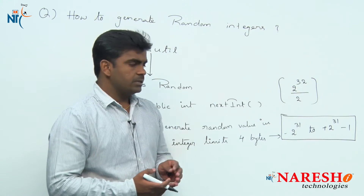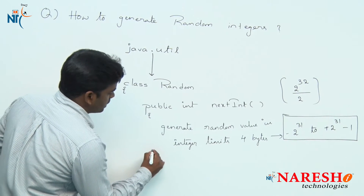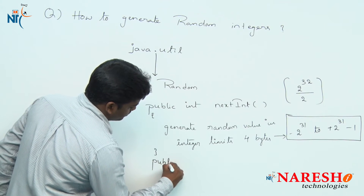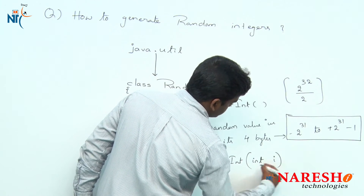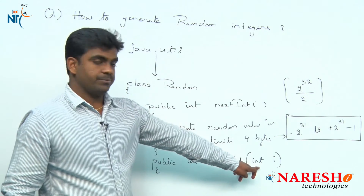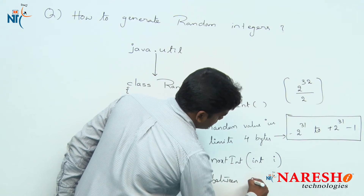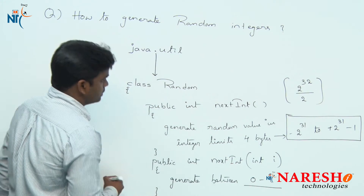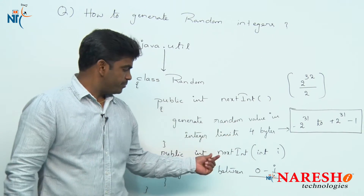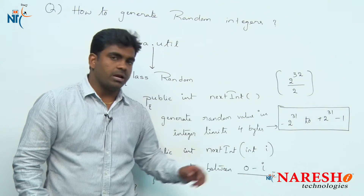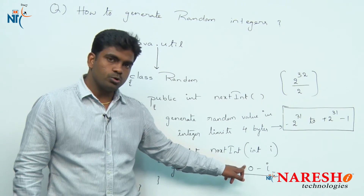If you do not want to generate within the full integer limits, but instead from 0 to a particular upper limit, there is one more method: public int nextInt, which takes an upper limit as an argument. You pass an integer value, and then it will generate any random value between 0 and that given upper limit. So we have two methods: nextInt with no arguments, and nextInt expecting an upper limit.